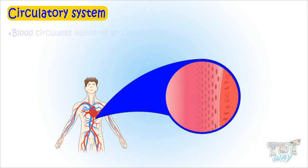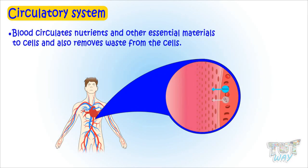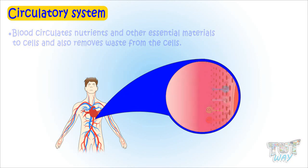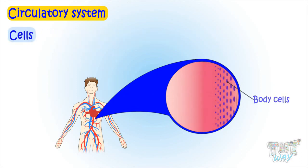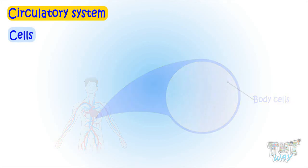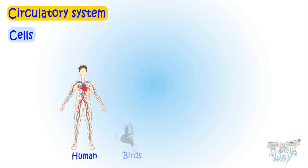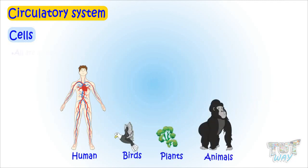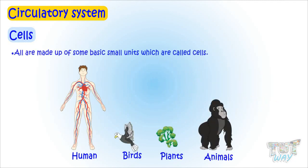The blood circulates nutrients and other essential materials to cells and also removes waste materials from the cells. But what are these cells? The body of all living beings — humans, birds, plants, and animals — are made up of some basic small units which are called cells.